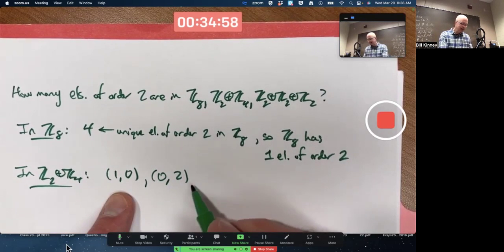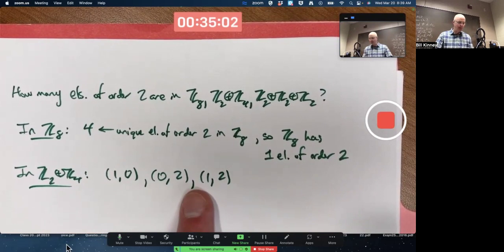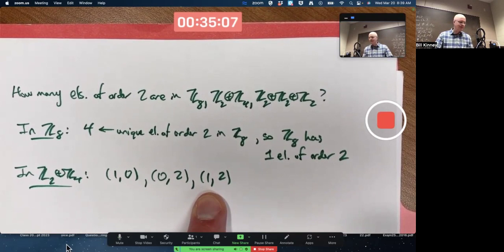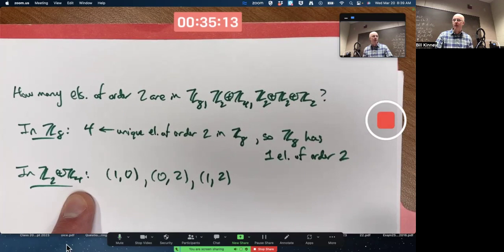Could we combine these? Do you think one, two has order two? Yes, it does. One, two added to itself gives you two, four. Mod the first component by two. Two mod two is zero. Mod the second component by four. Four mod four is zero.